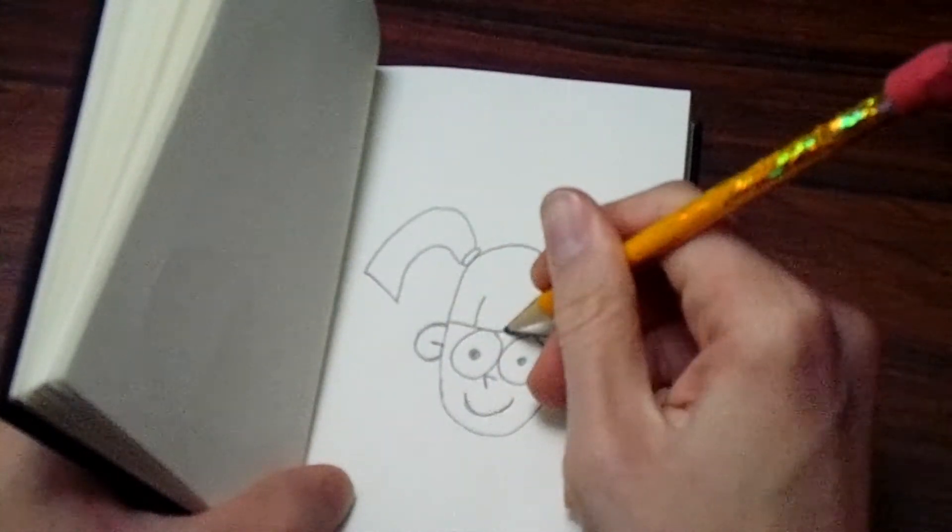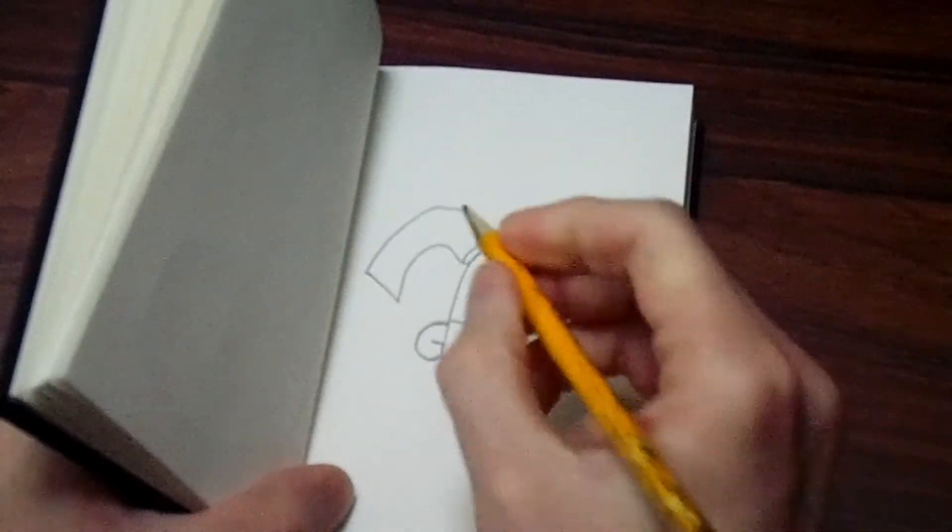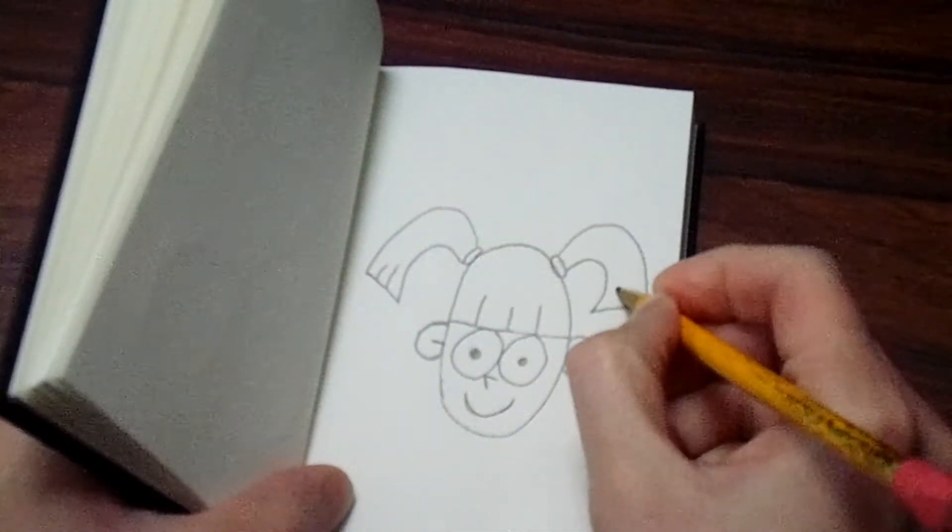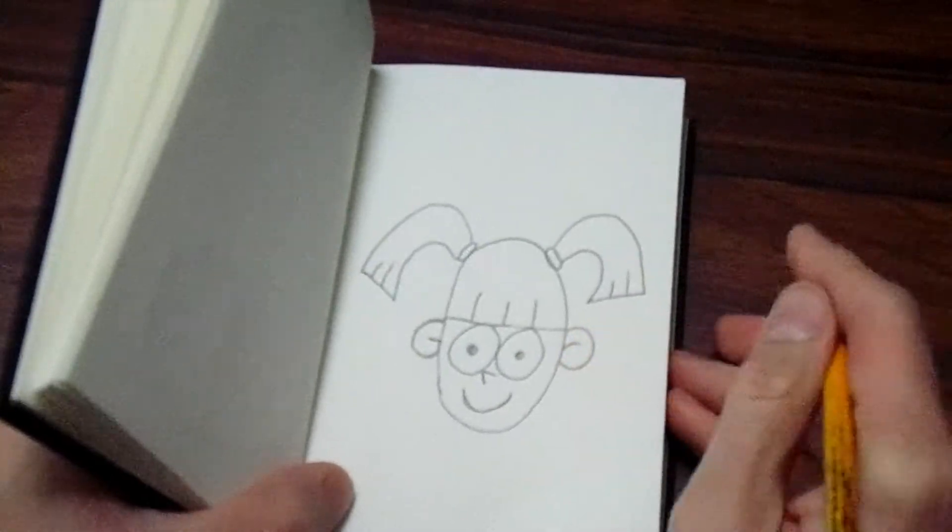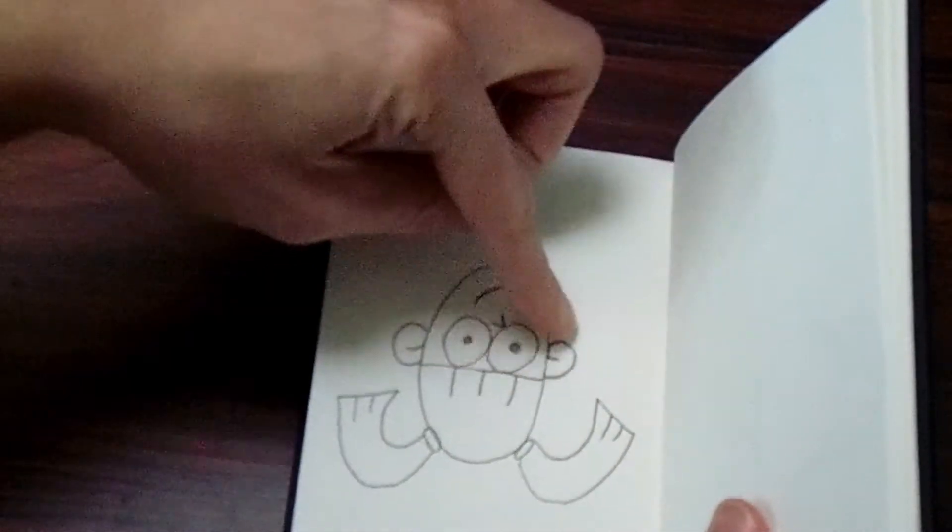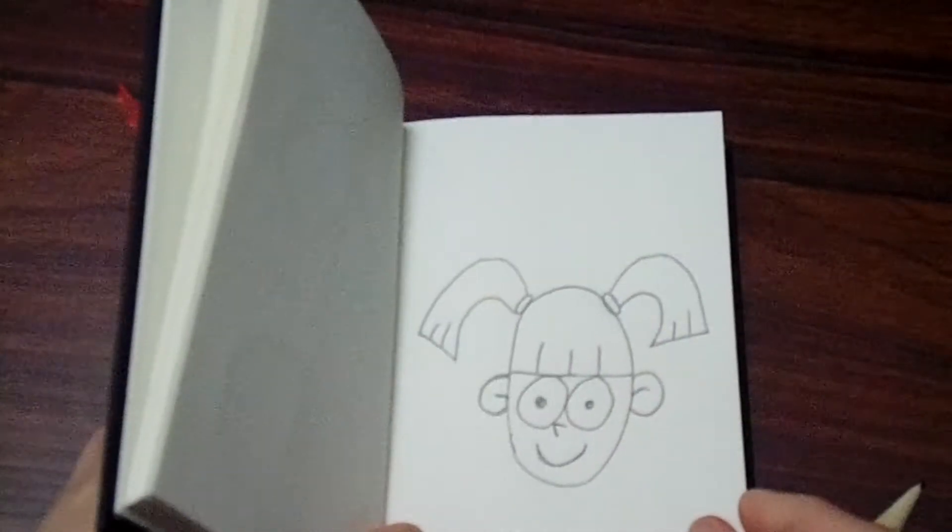Add some lines for some hair details, because hair is thin strings. And you have turned your letter G into a girl.